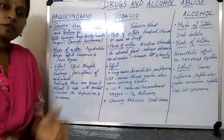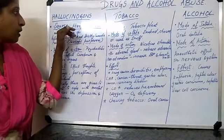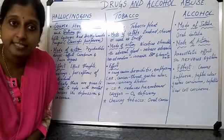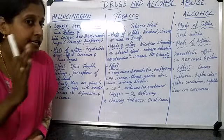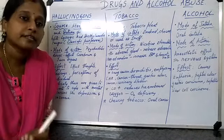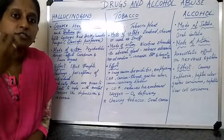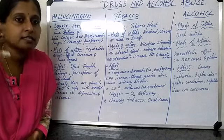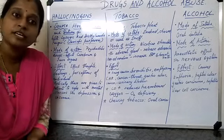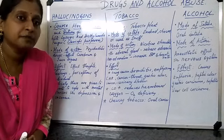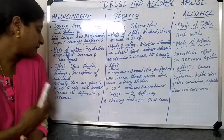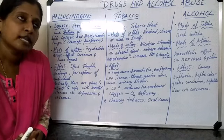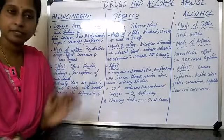To summarize hallucinogens: sources are Atropa belladonna and Datura species. LSD (lysergic acid diethylamide) is obtained from the fungus Claviceps purpurea. They affect the cerebrum and sense organs, altering thoughts, feelings, and perception. Medically they are used for depression and insomnia.